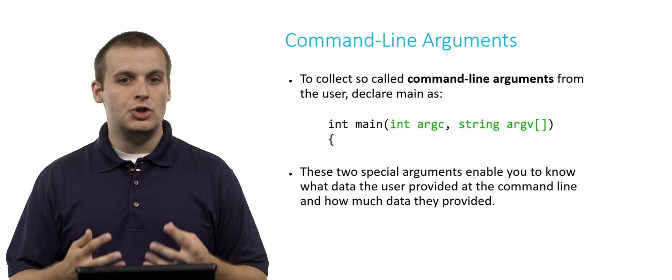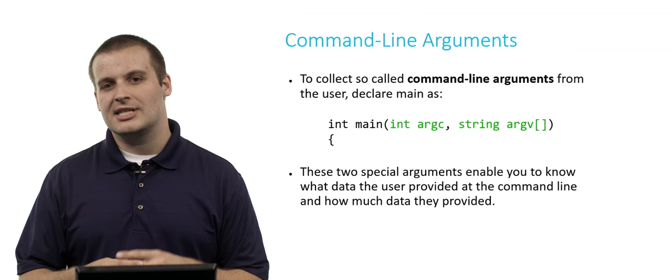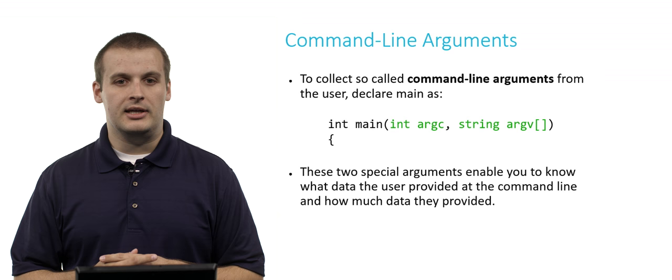So what does that mean already? Well, we are passing in two parameters or arguments or inputs to main. One, an integer called argc. And the other is what? It's an array of strings. Right? We see that square bracket notation. It's an array of strings. It's not an individual string. It's an array of strings.